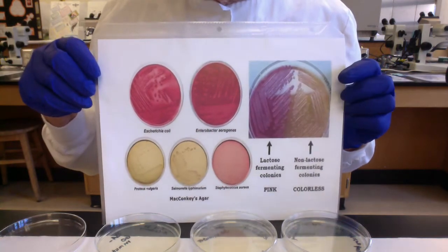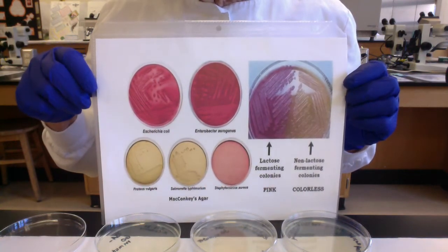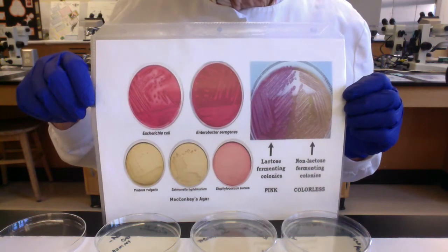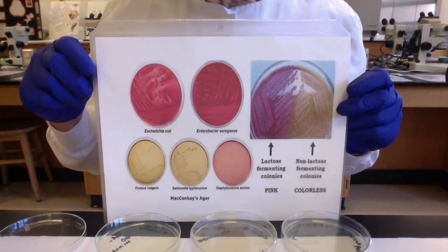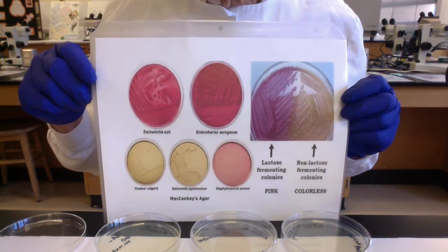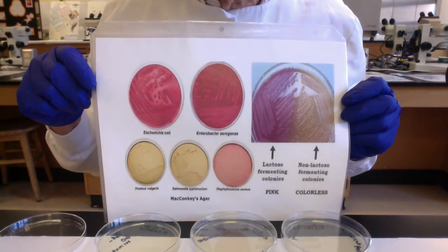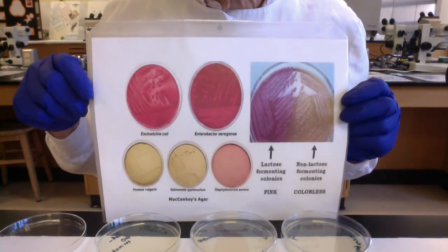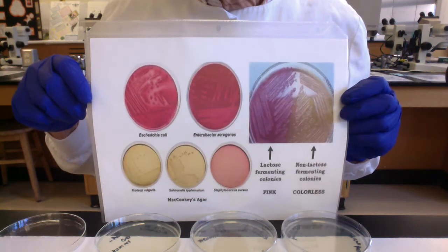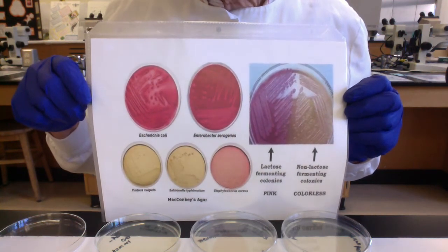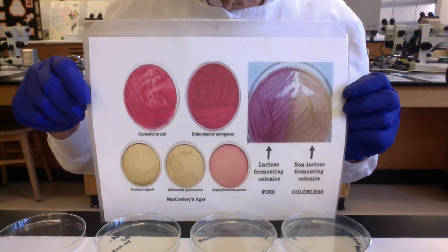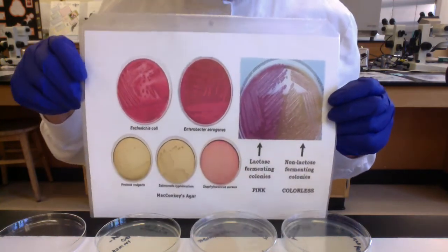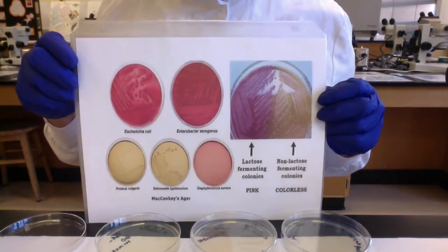So MacConkey's is going to select for the growth of gram-negative Enterobacteriaceae, sometimes simply called gram-negative enterics. Enterics include E. coli, Salmonella, Shigella, Yersinia — believe it or not, Yersinia pestis belongs to this family — Serratia, Klebsiella, and Enterobacter. It's a huge family, and many of these Enterobacteriaceae can be pathogens.